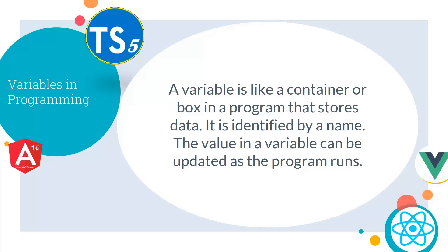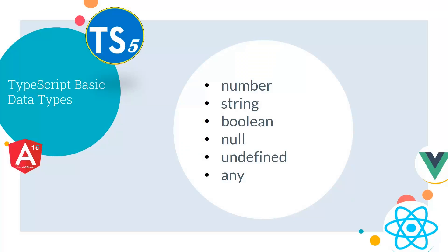Let's see what variables are in programming. A variable is like a container or box in a program that stores data. It is identified by a name, and the value in a variable can be updated as the program runs. In TypeScript, we have these basic data types: number, string, boolean, null, undefined, and any.